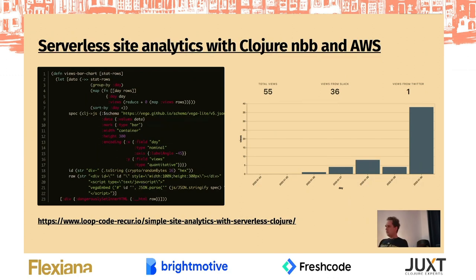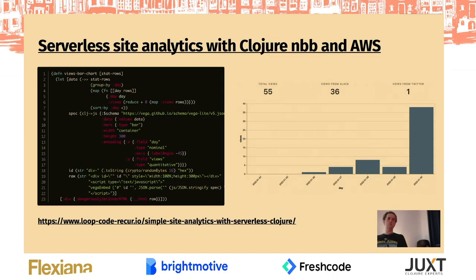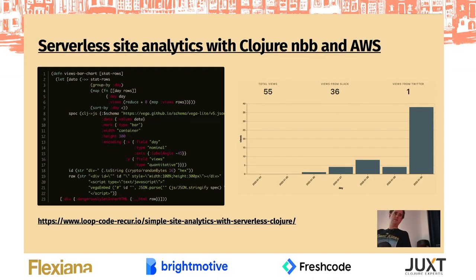There's also a blog article that goes deeper with an example where the author built two Lambda functions — one for saving statistics about his blog into an AWS database, and the other to render the statistics. Since AWS Lambda's first million or so requests are free, if you don't have a hugely popular blog you basically get these analytics for free.